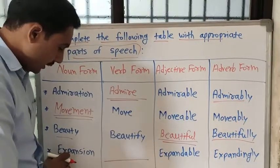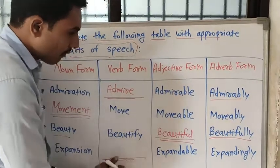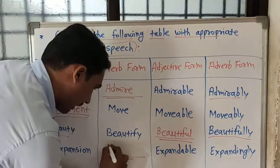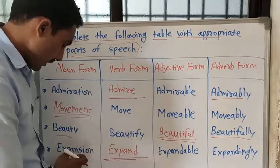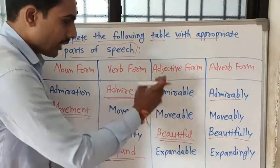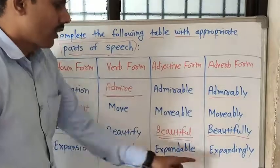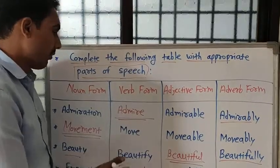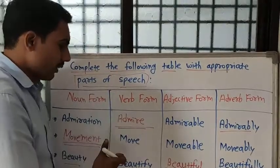Now the last one — 'expansion'. It is a noun form and you want to write the verb form of that word. You can write 'expand'. So: expansion, expand, expandable — that is the adjective form — and expandingly as the adverb form. In this way, we can easily complete any chart with the help of verb forms or parts of speech.